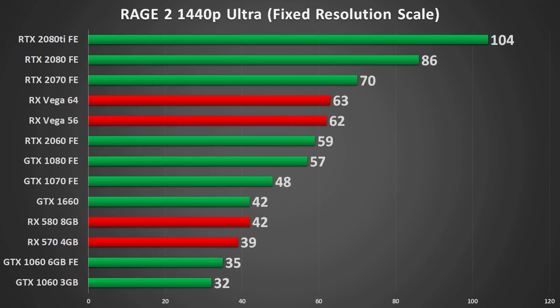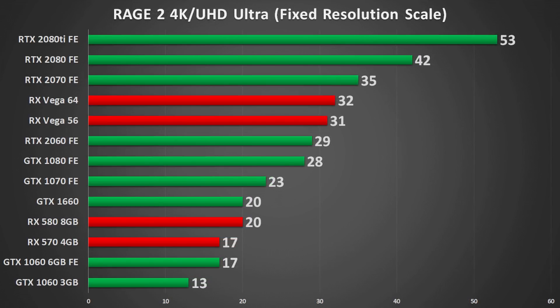Bumping up to 1440p puts significant strain on these cards, dropping many well below the 60fps mark. You need at least a Vega 56 to breach the 60fps average, and even the RTX 2060 falls just below that threshold. The jump in demand from 1080p to 1440p is quite substantial.